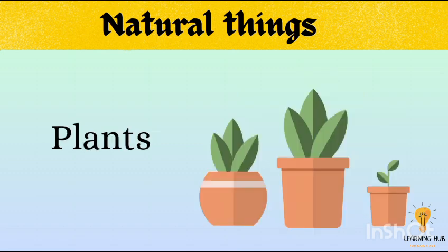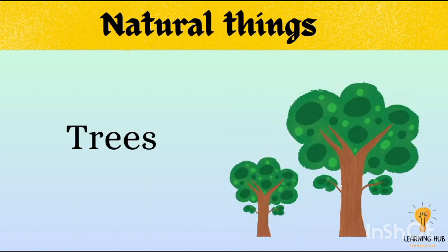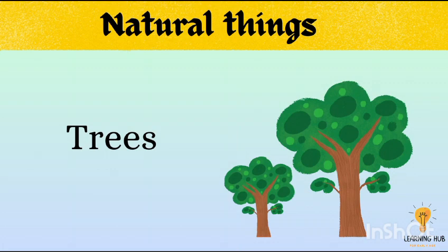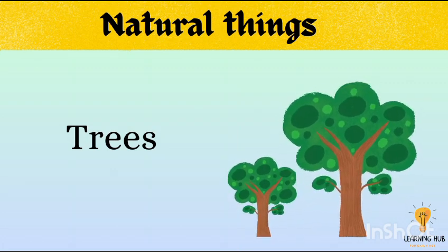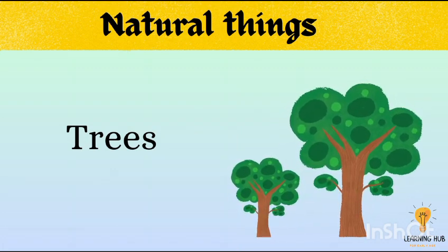Plants are natural objects. Allah has created plants for us. Plants give us oxygen. Plants and trees make our environment beautiful. Trees purify the air we breathe in.